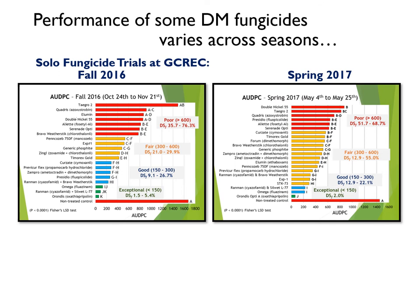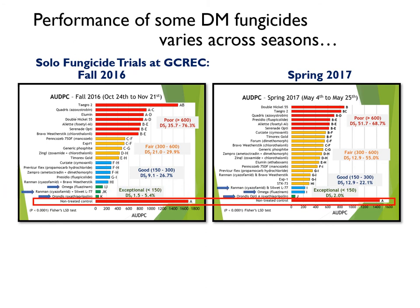Here are two field trials that represent some trends we've observed over the years. At the bottom of each figure is the non-treated control. The fungicide treatments are sorted from top down, from least to most effective. Treatments are color-coded on performance with the range of AUDPC values and final disease severity for each group. While many products perform consistently across the two seasons — like Orondis, Omega, and Ranman — some did not. I've put arrows on Elumin, Kurze, and Presidio to show how their performance differed from the fall of 2016 to the spring of 2017.